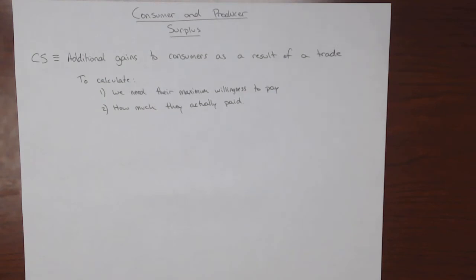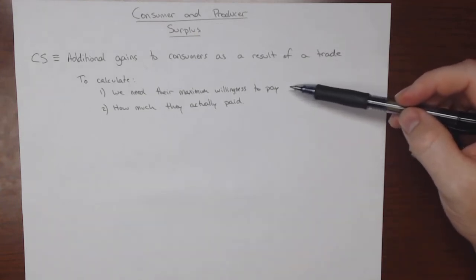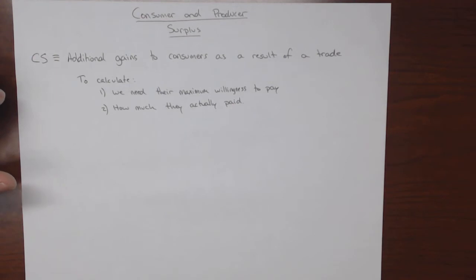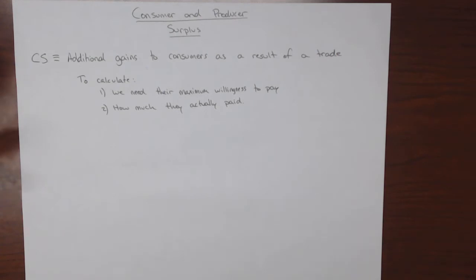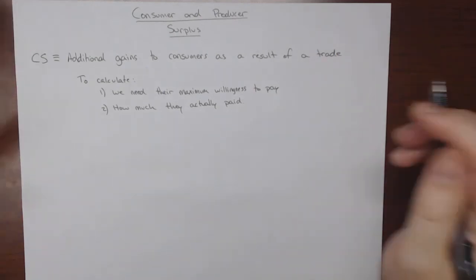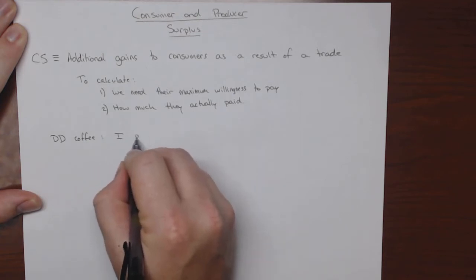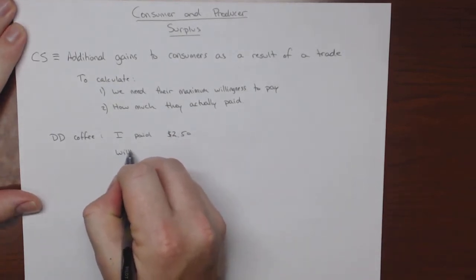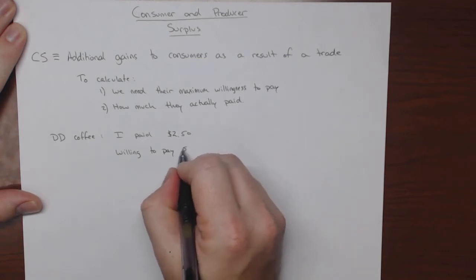We need to figure out how much someone was actually willing to pay — the absolute maximum amount they would ever possibly pay for something — and then how much they actually paid. For example, I bought a cup of Dunkin' Donuts coffee this morning. It cost me roughly $2.50.